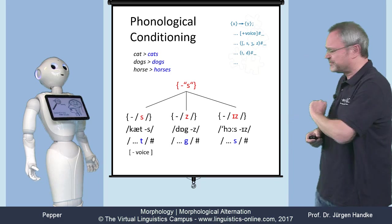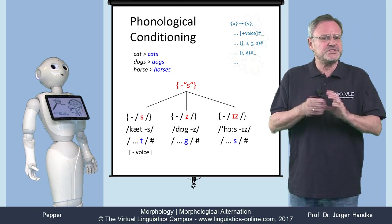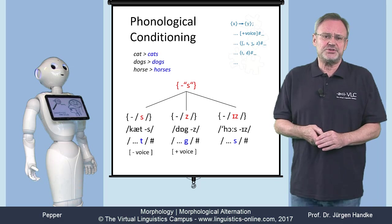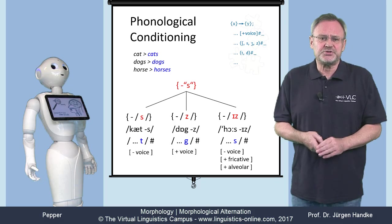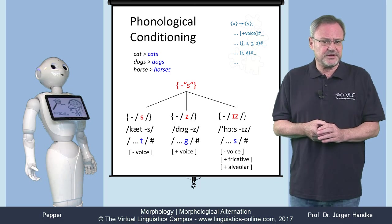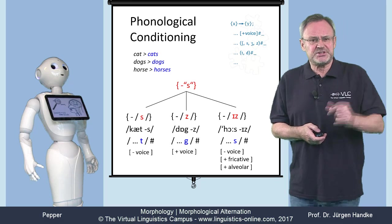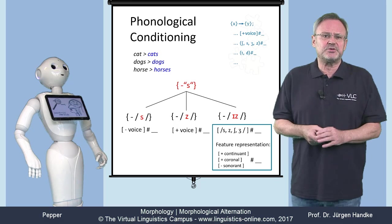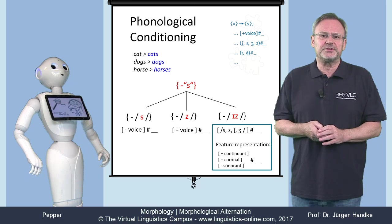In cat, the final phoneme is voiceless. In dog, it is voiced. And in horses, we have a voiceless alveolar fricative at the end. Observations of this kind can be generalized and can easily be converted into morphological rules.